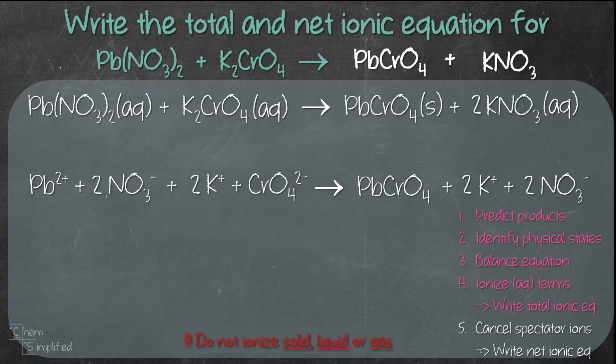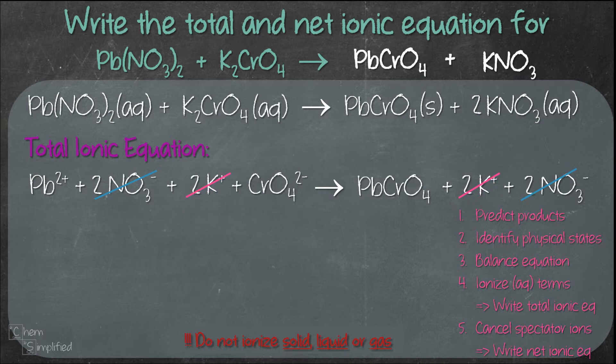At this point, we've written out the total ionic equation. Now we move on to the final step: cancel the spectator ions, which are ions that exist on both sides of the equation. Looking at our equation, we have 2NO₃⁻ on both sides, so we cancel them out. We also have 2K⁺ on both sides, so we cancel them out as well. Then we rewrite the equation.